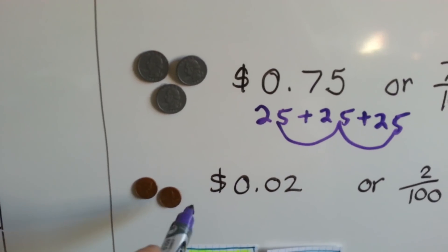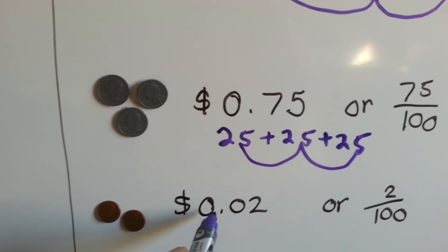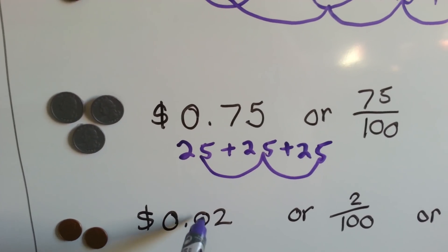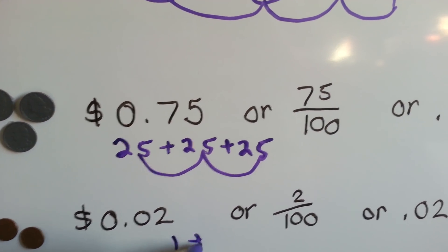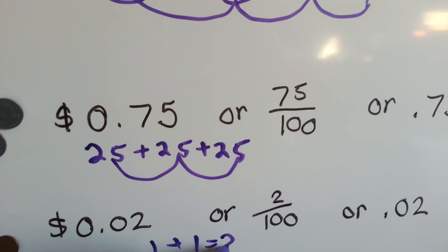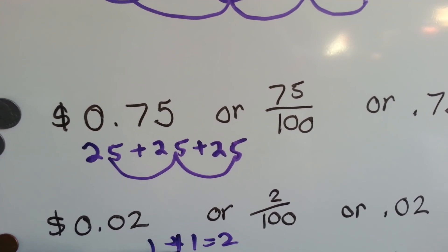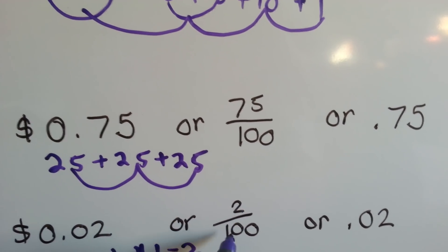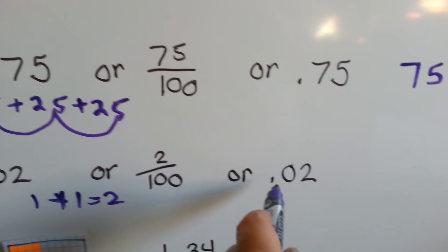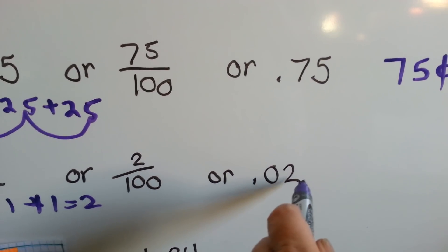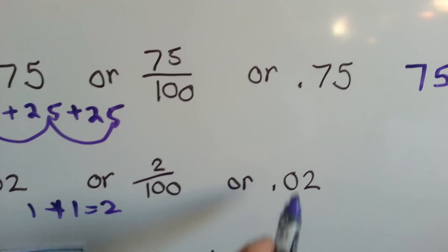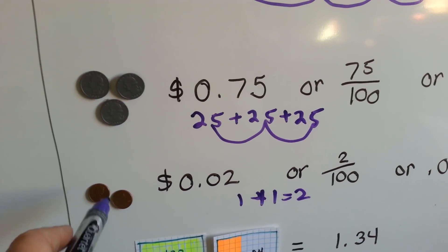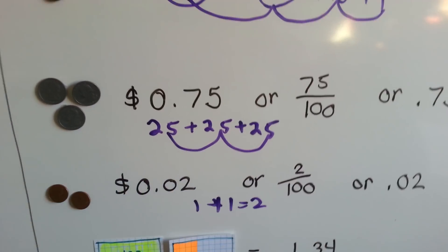Now look. We've got two pennies. It's written as dollar sign, zero, with a decimal point, zero, and a two. And it's just a one plus a one. It's two one-hundredths. It's two cents out of a hundred. Or it's two-hundredths. Because there's a hundred pennies in a dollar. So two of them would be two-hundredths.